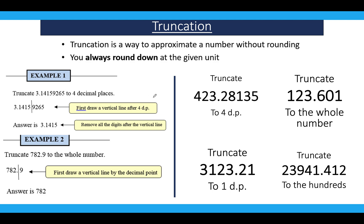Similarly over here, to four decimal places, where one decimal place, two decimal place, three decimal place, four decimal place, then we put a line over here and chop off everything after here. So we would be left with 423.2813. Over here to one decimal place, we go to one decimal place, we draw a line and slice off everything else.